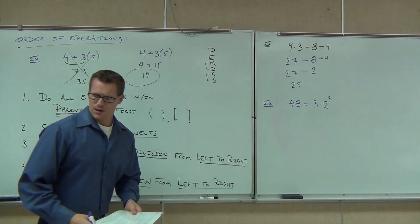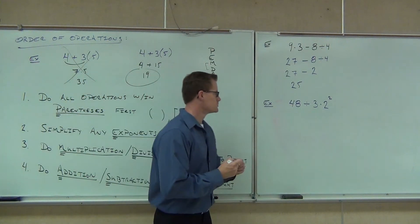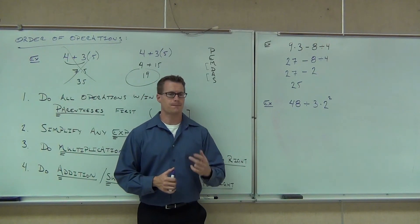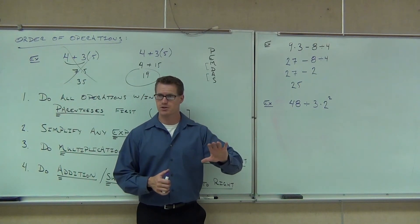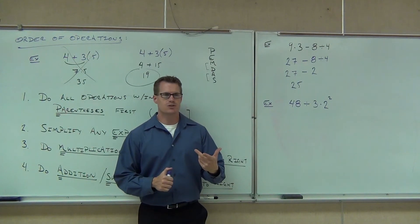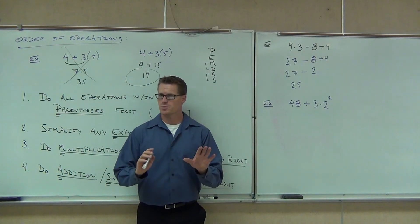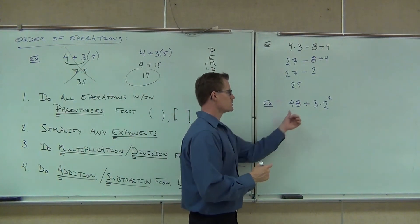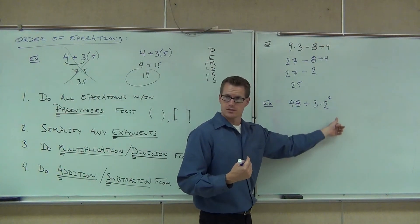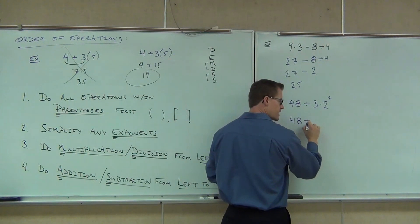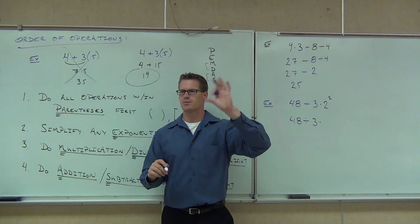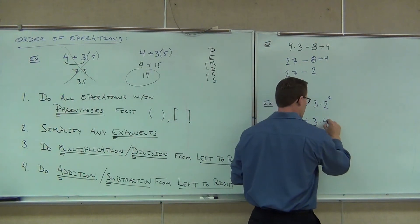This next one is one of my favorites — it actually shows up on the final exam for your class, because it shows me in just two seconds whether you really understand the order of operations. We'll do it together. First, check for parentheses — none. Next, check for exponents — yes, we have one. When you do, ignore the rest of the problem and do just that little piece. Am I going to do 48 divided by 3 right now? No. Am I going to do 3 times 2 right now? No — just this piece. What is 2 to the second power? Four. Two times itself is four. Then we move on.